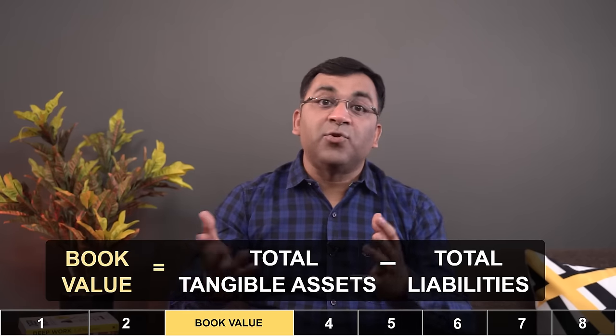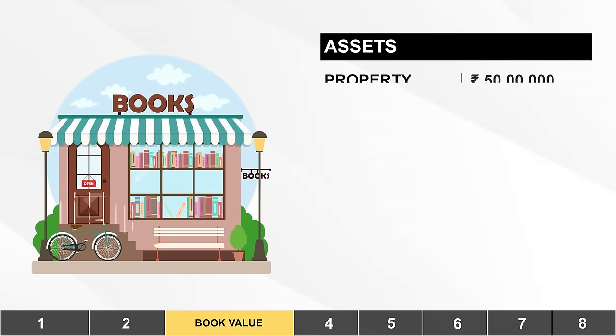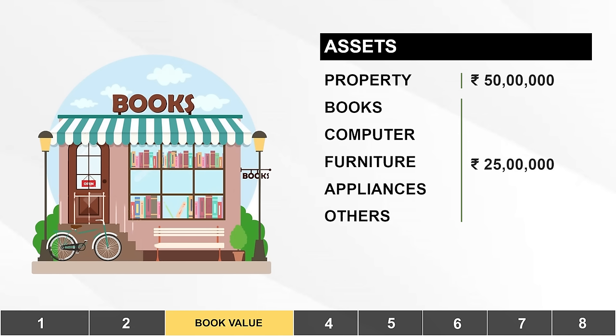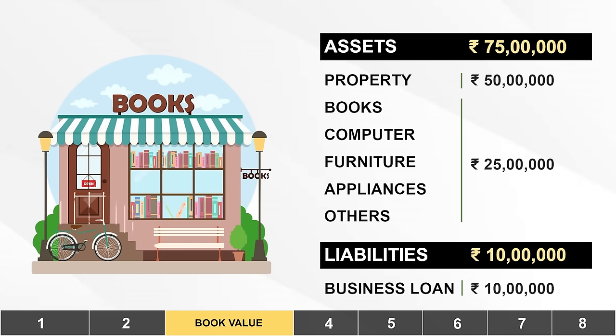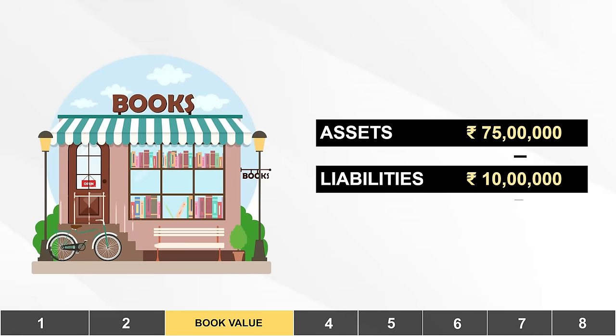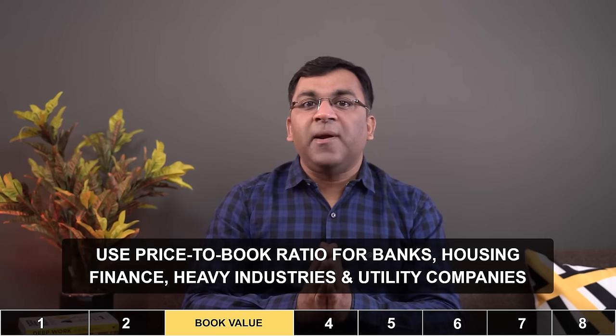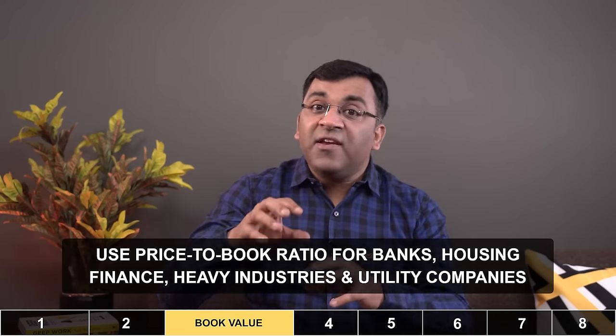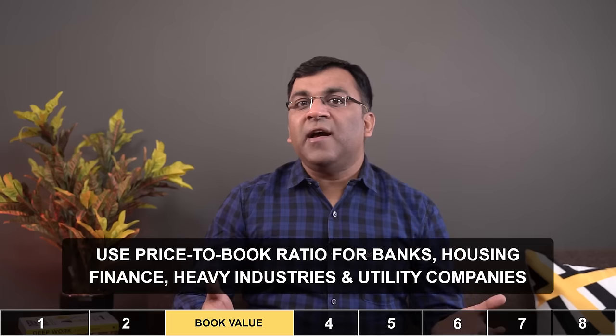The third valuation technique is based on book value, which is simply the total tangible assets of a business minus its total liabilities. In the case of our bookshop, in addition to the 50 lakh property, the shop also has about 5,000 books, a computer, furniture like wooden shelves, tables and chairs, and fittings like air conditioners, a CCTV system, and WiFi. All of this put together comes to about 75 lakhs. The shop had also recently taken a small business loan with an outstanding of 10 lakhs. So assets minus liabilities — 75 lakhs minus 10 lakhs — gives us a book value of 65 lakhs. This concept is not useful for every kind of company; asset-light models like FMCG or technology companies don't have much use for the price-to-book ratio. However, it is very useful in valuing banks, housing finance companies, and heavy industries like metals, oil and gas, as well as utility companies like power, gas and water.